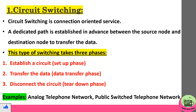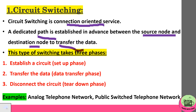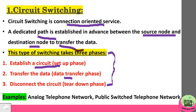Beginning with circuit switching — circuit switching is a connection-oriented service. A dedicated path is established in advance between the source node and destination node to transfer the data. Circuit switching takes three phases: first, establishing a circuit, known as the setup phase; second, transferring the data, known as the data transfer phase; and third, disconnecting the circuit, known as the tear down phase. Examples include analog telephone network and the public switched telephone network.